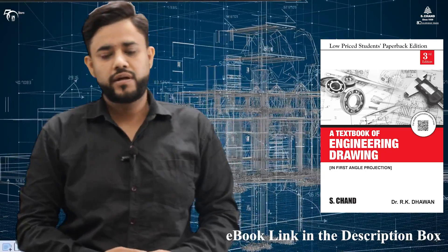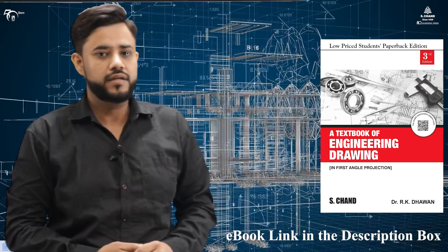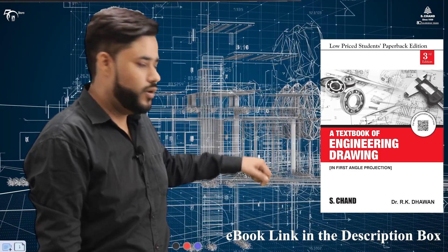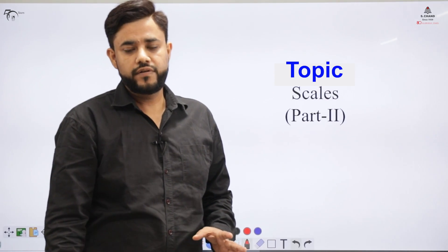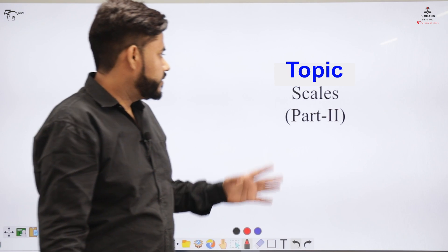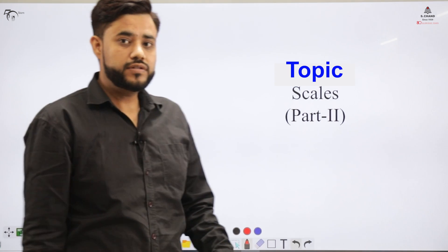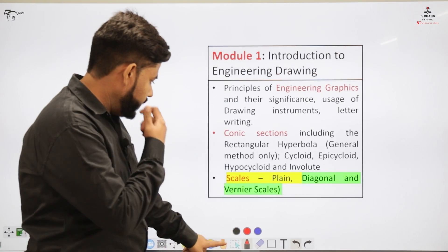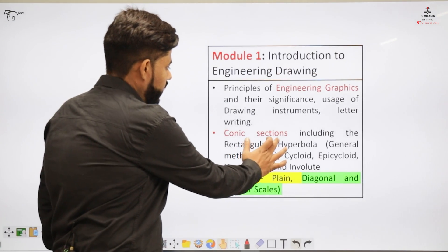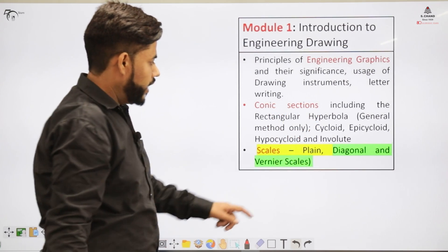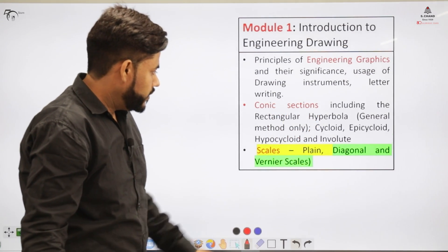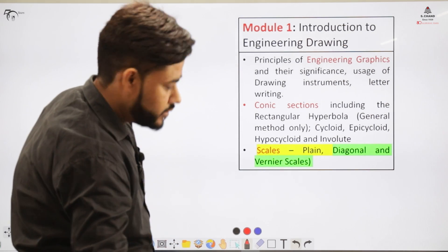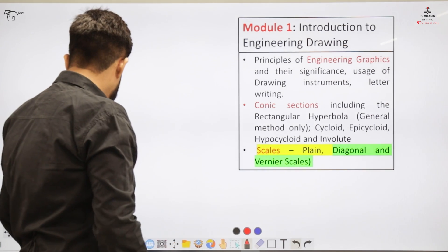Welcome to S.Chan Academy. If you want a detailed description about the topic, you can refer to the book by S.Chan Publishing — the link is in the description box below. This is the second part of the video; we are starting Lecture 3, Part 2. If you haven't watched the first part, the link is in the description box. The module we are covering is Module 1, and in this part we cover the diagonal and vernier scales.